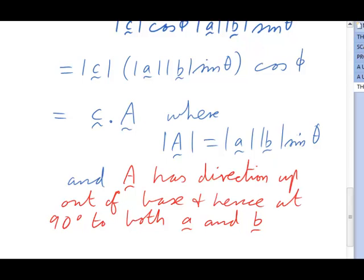We call it A cross B, and we name it the vector product. That's because it is a vector.